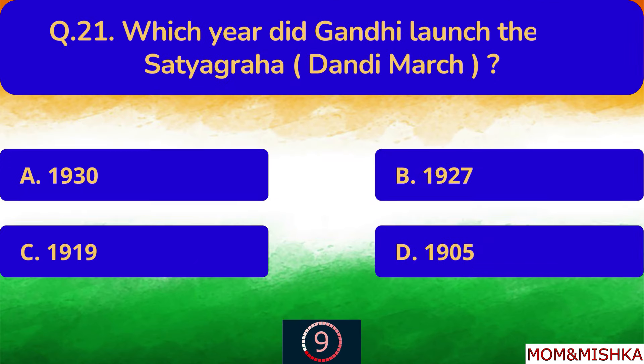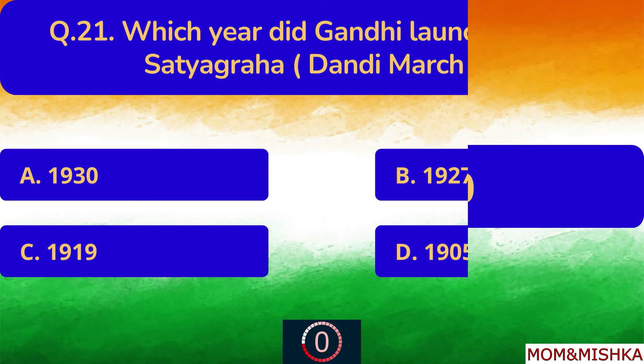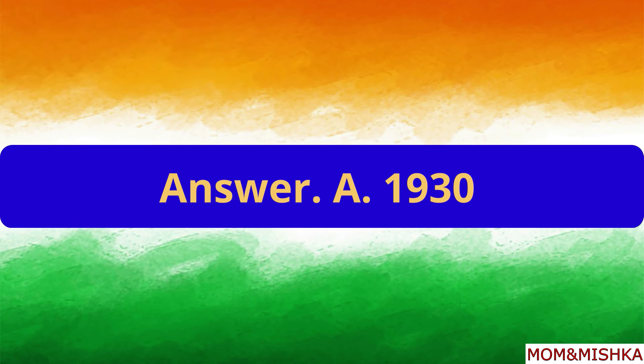Which year did Gandhi launch the Salt Satyagraha, Dandi March? In year 1930. Option A.